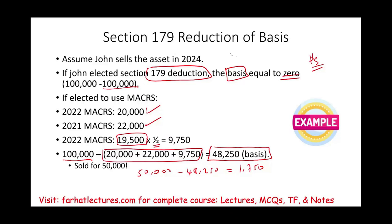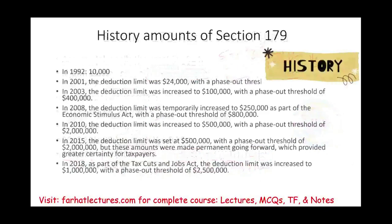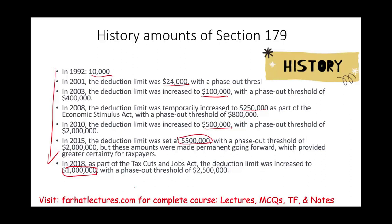If John elected Section 179 and then sells for $50,000, the full $50,000 is a taxable gain because he would recapture that depreciation. A brief history: Section 179 started at $10,000, went to $24,000 in 2001, then $100,000, then $250,000, then $500,000 in 2010. In 2015 it was made permanent. As part of the Tax Cuts and Jobs Act in 2018, it went up to $1 million. Now in 2022 it's $1,080,000, though this amount changes annually.